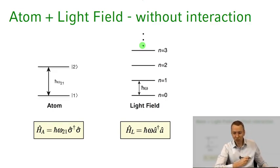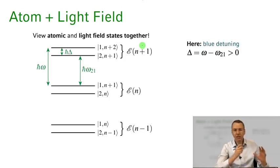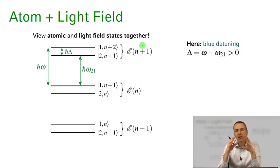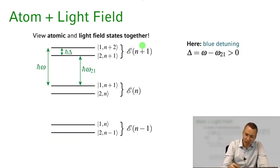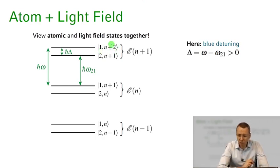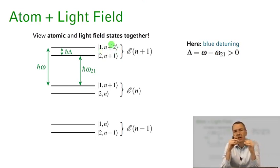Now let's regroup these combined states of the atom and the light field. Let's join the states together in these product states. Remember the notation — for example, |1, n+2⟩ means the atom is in the ground state and I have n+2 photons in my system. Let's group them in energy space.